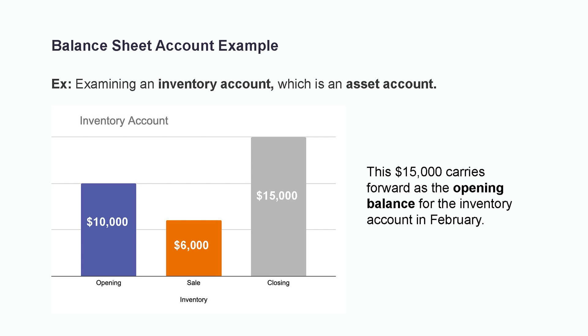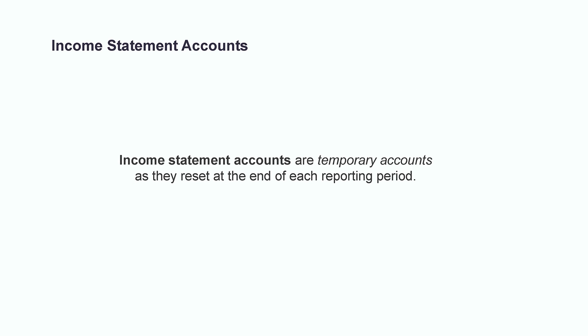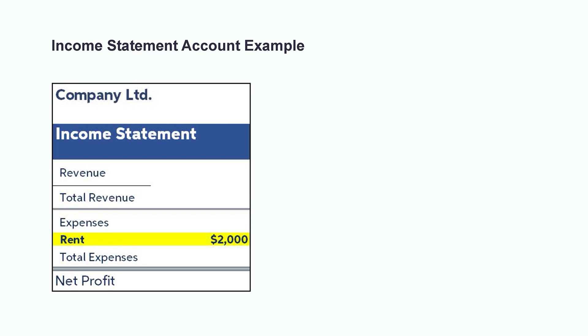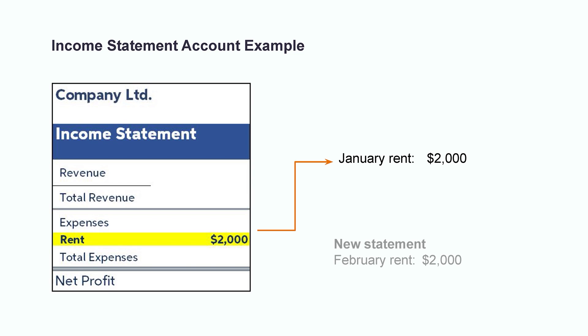While balance sheet accounts are permanent accounts that show a running balance, income statement accounts are temporary accounts. Since they report balances covering a specific period of time, such as a month or a year, income statement accounts are reset at the end of each reporting period. As an example, in January a company has a balance in their rent account of $2,000 for the month. This would show up on their January income statement as their total rent expense for that month. However, since this is a temporary account, at the start of February the balance resets to $0, so that by the end of February there will be another $2,000 monthly rent expense in their new income statement for that month.